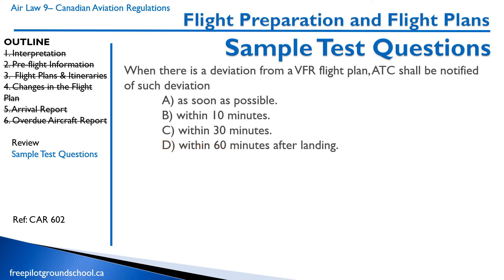Where there is a deviation from a VFR flight plan, ATC shall be notified of such deviation: A, as soon as possible; B, within 10 minutes; C, within 30 minutes; D, within 60 minutes after landing. The correct answer is A — as soon as possible.